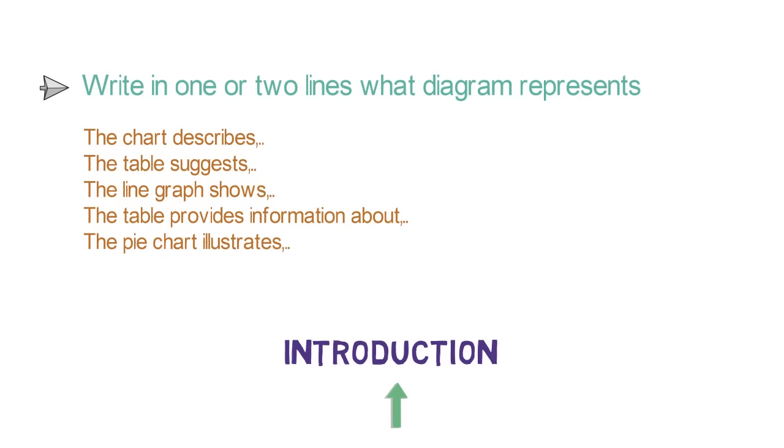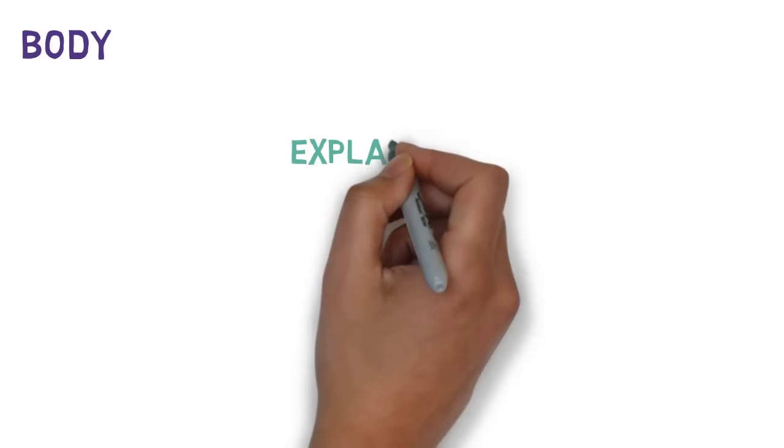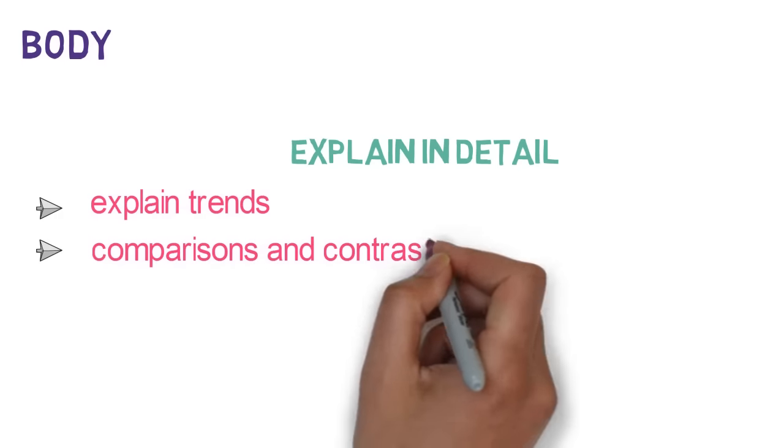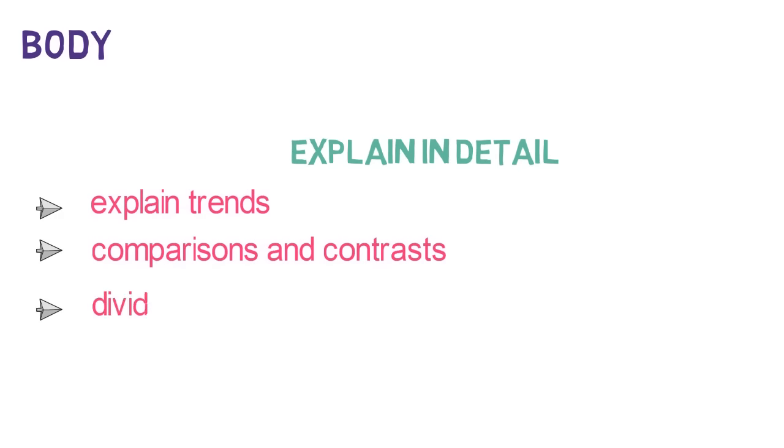Next comes the body. In the body, explain in detail what the diagram is about. Explain the trends, make comparisons and contrast. You can divide the body into subparagraphs if required. Please do check the word limit and accordingly add the paragraphs.